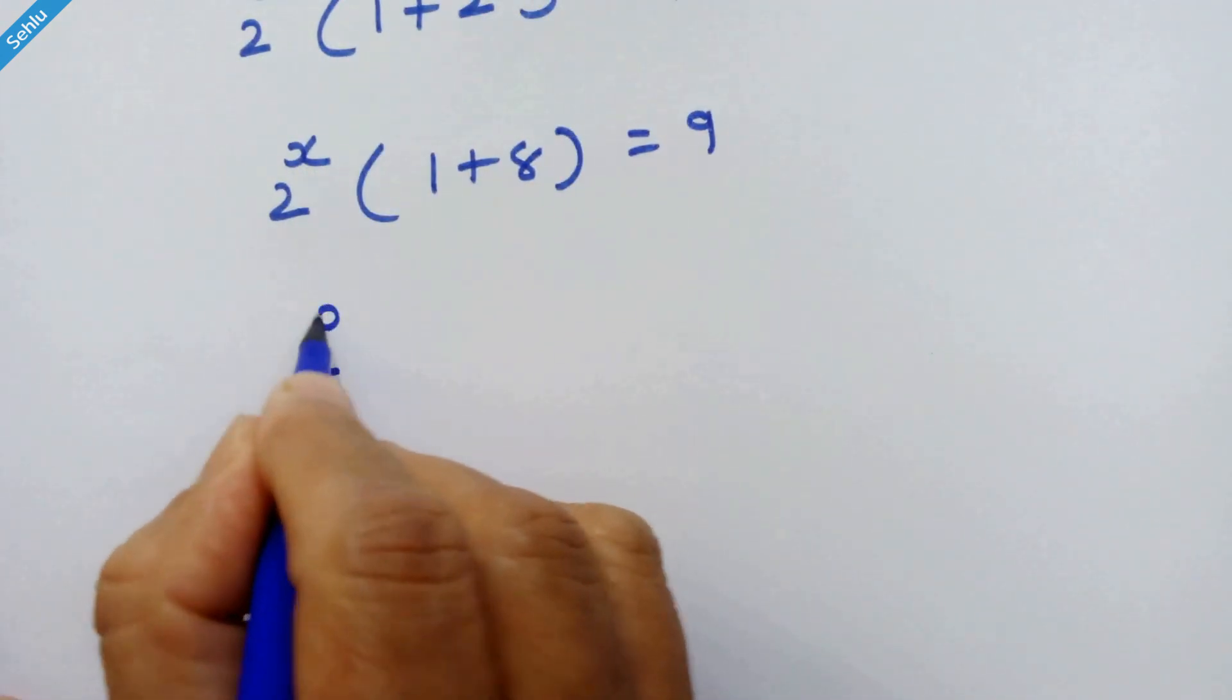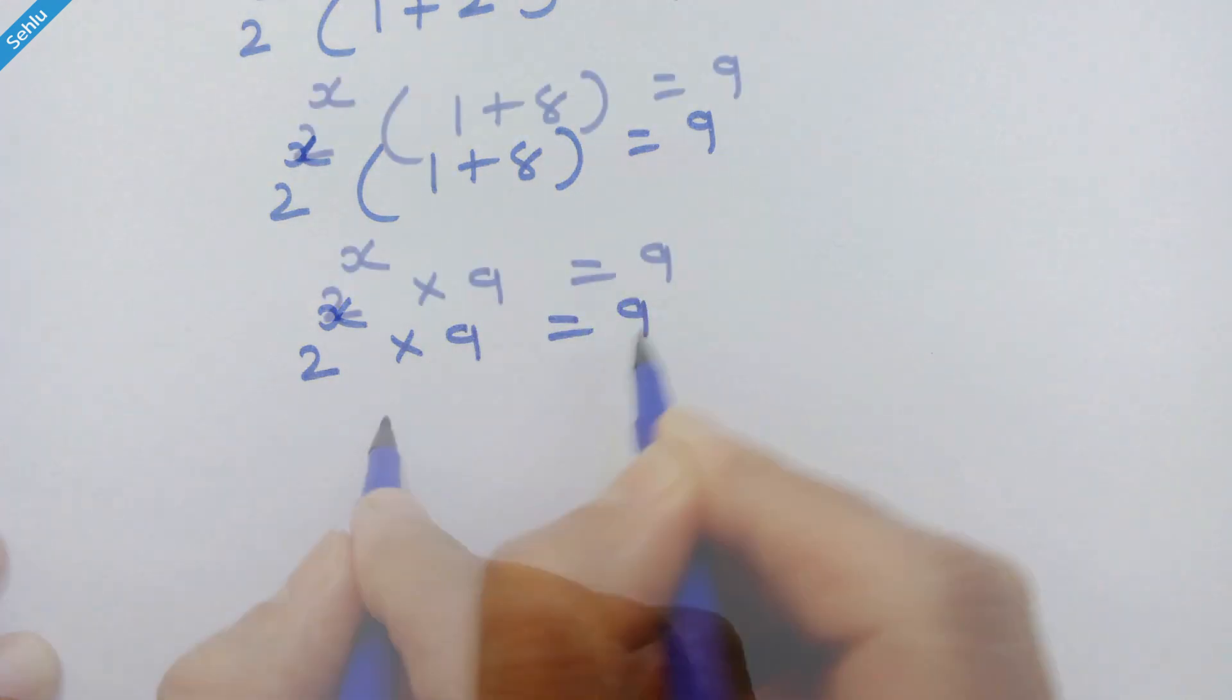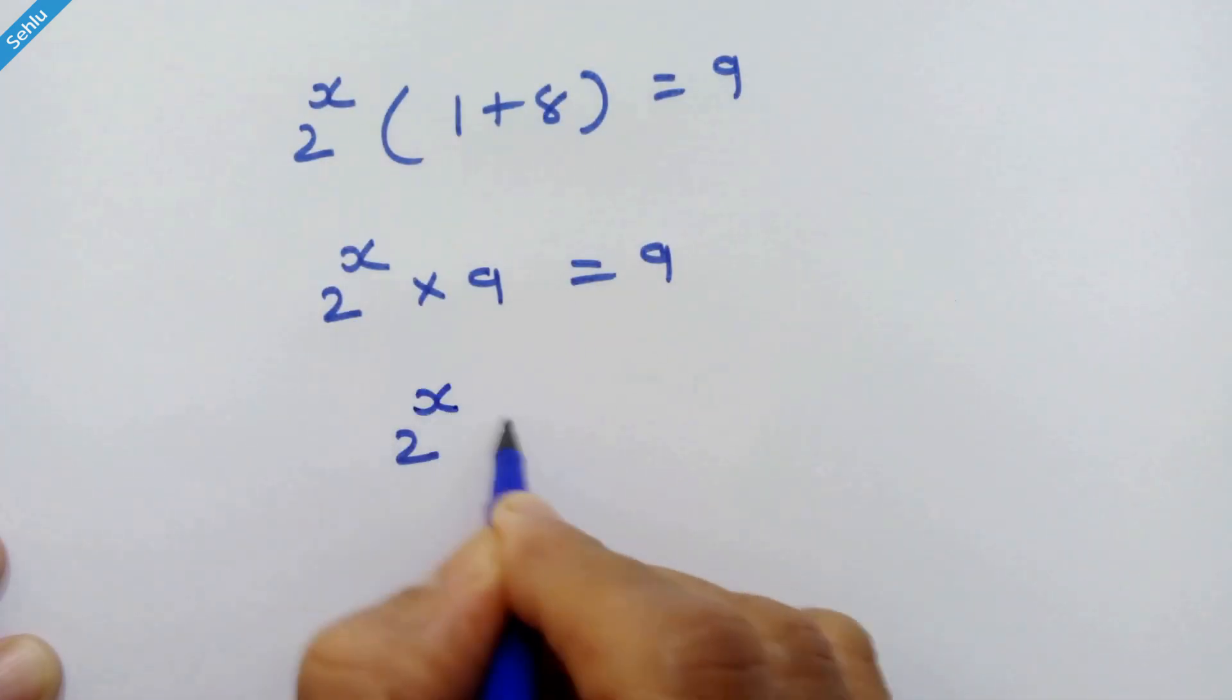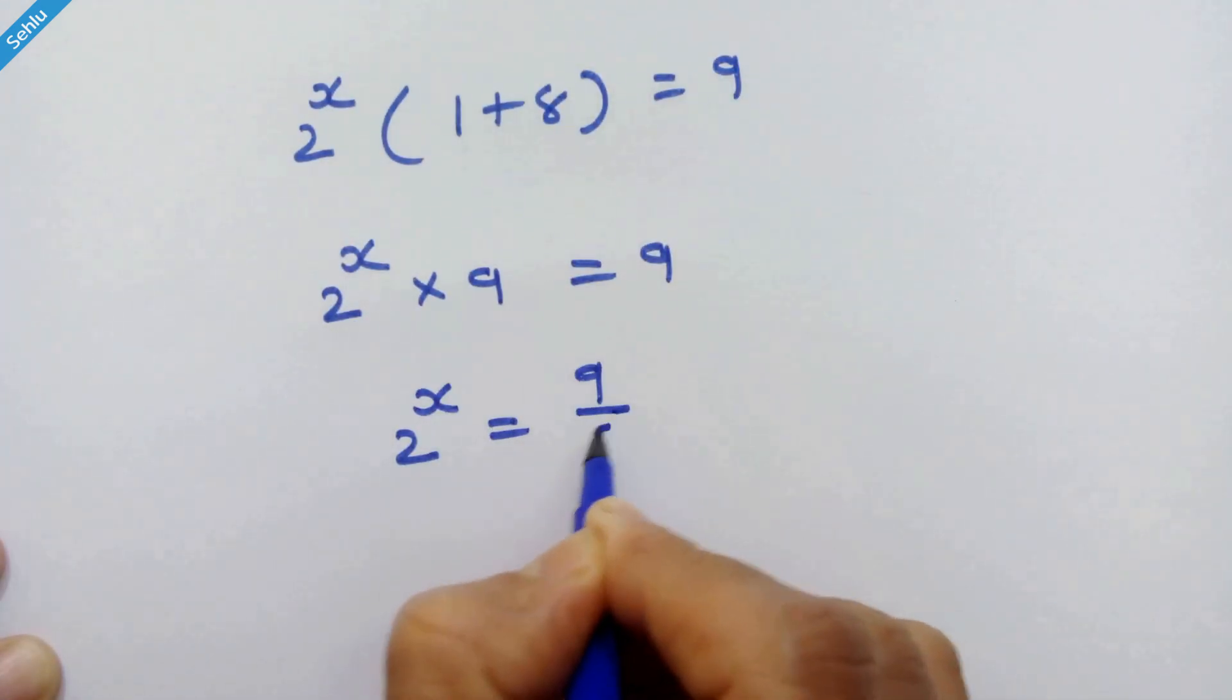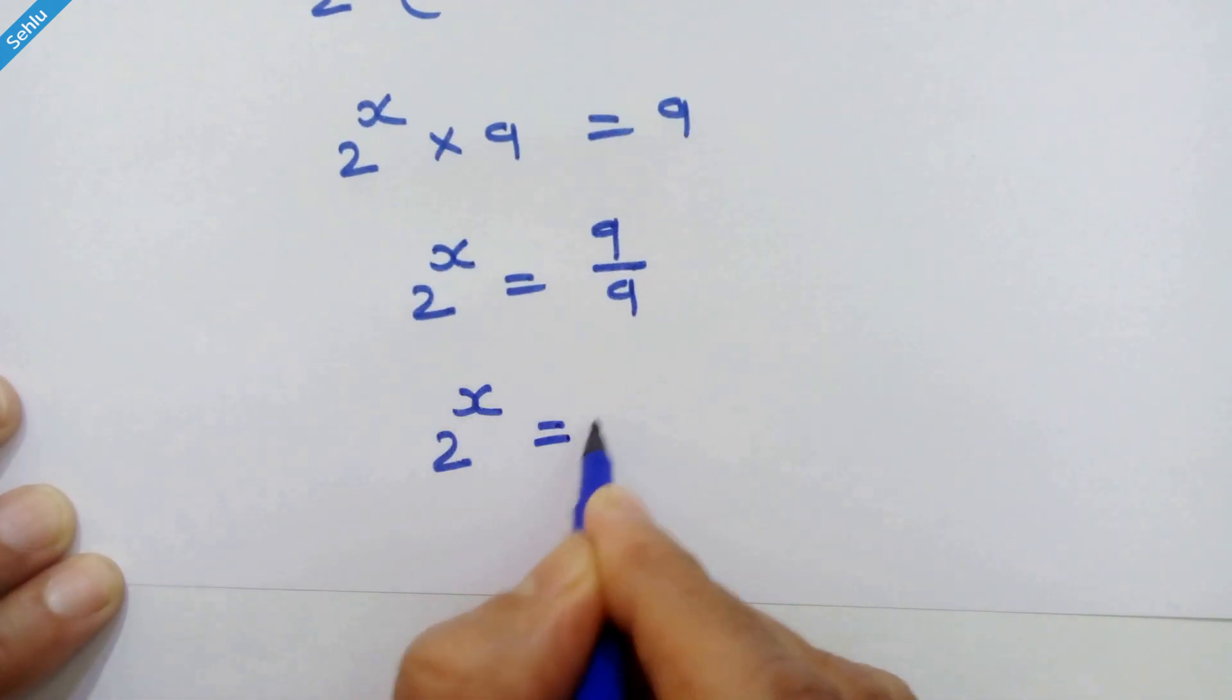So 2 raised to x into 9 is equal to 9. Here we have 2 raised to x is equal to 9 upon 9. So 2 raised to x is equal to 1.